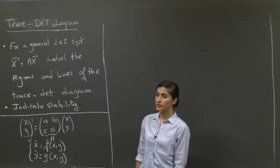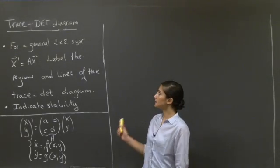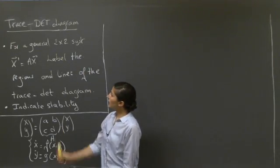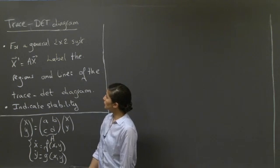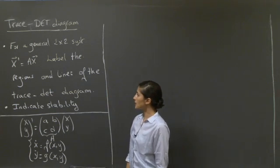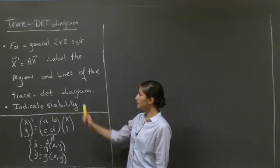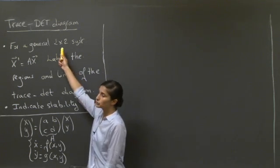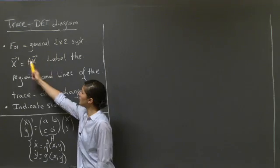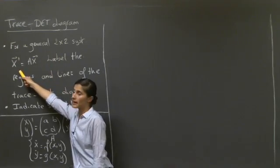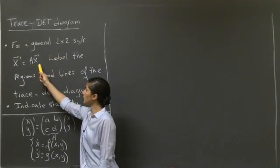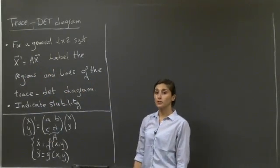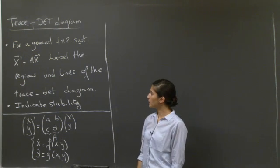Welcome to this recitation on the trace-determinant diagram. You're asked to label the regions and lines of the trace-determinant diagram for a 2x2 general system written in the form x' = Ax, and to indicate the stability on your diagram.